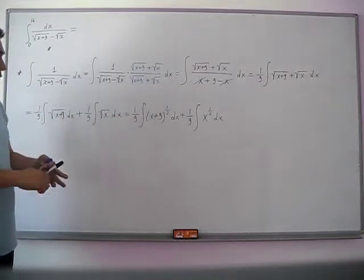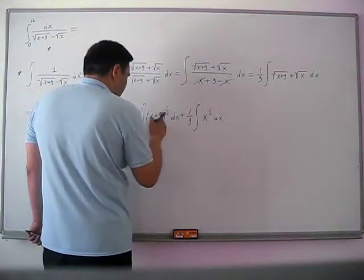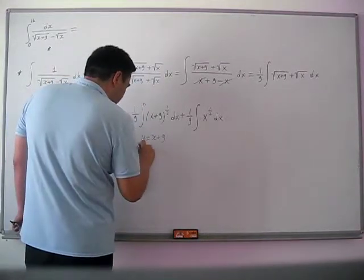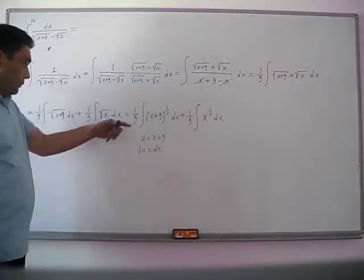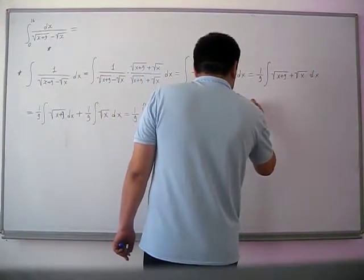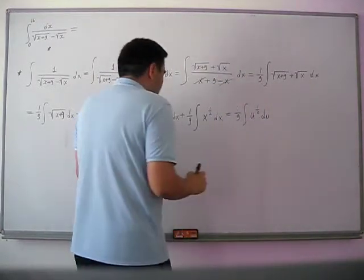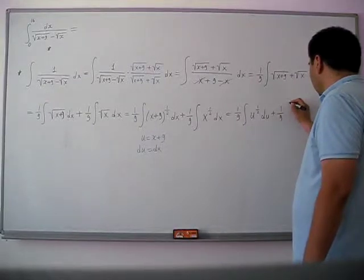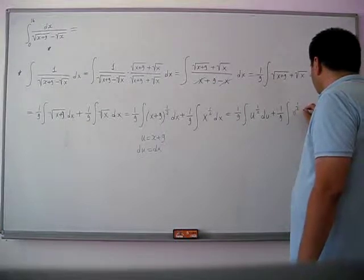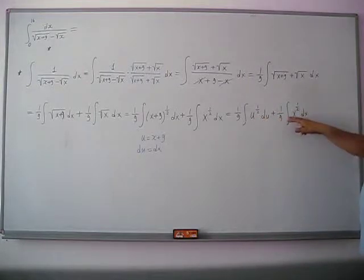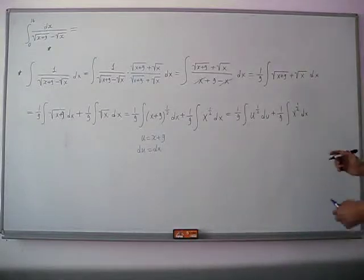For the first integral, we use u-substitution. Let u = x + 9. Differentiating both sides gives du = dx. Now we substitute: the first integral becomes (1/9) integral of u to the power 1/2 du. We write the second integral as (1/9) integral of x to the power 1/2 dx. Both are similar integrals, just with different variable names, and we can apply the power rule to both.